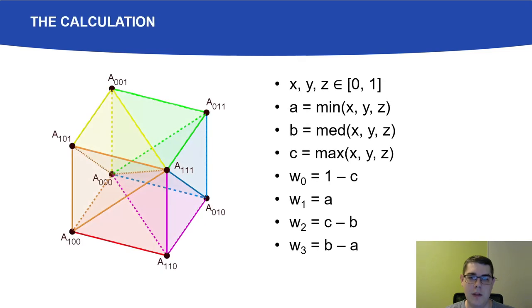The computation is based on ordering the normalized coordinates of a sampling position. This gives us both the interpolation weights and the tetrahedron in which the coordinates lie. The latter describes which vertices need to be used for interpolation.